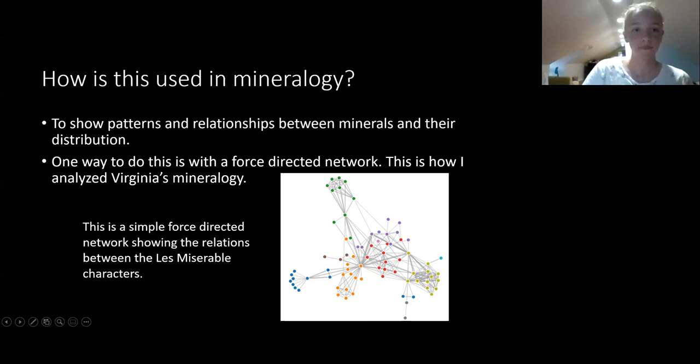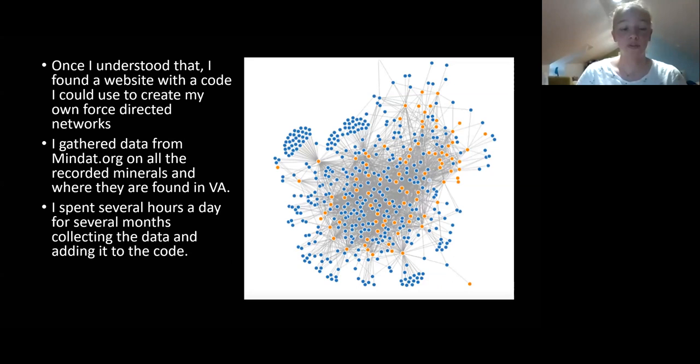Once I kind of understood all those questions, I found a website with a code that I could use as a template to create my own networks. I gathered data from MnDAT and recorded on all the recorded minerals and where they were found in Virginia. I spent several hours a day for several months collecting this data and adding it to the code. What's on the right is what it looked like once I'd inputted all the data.